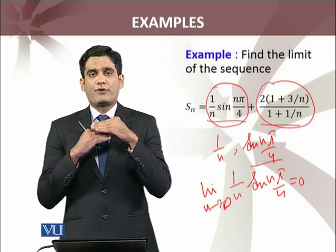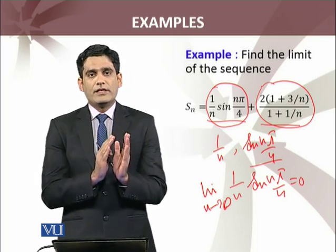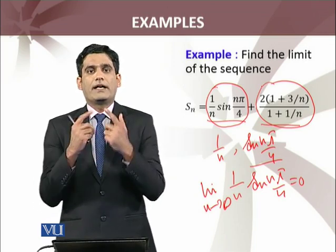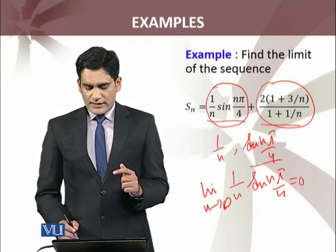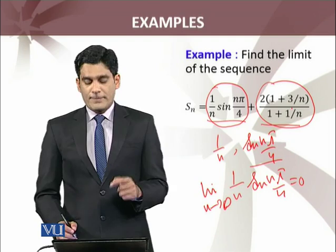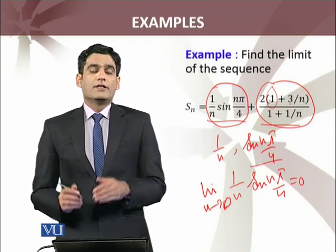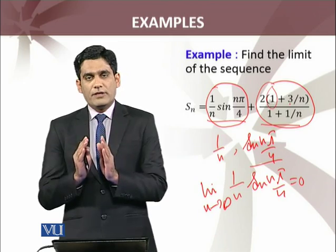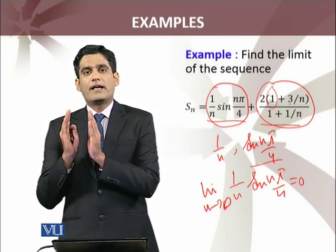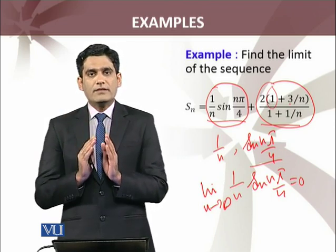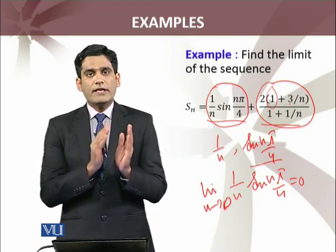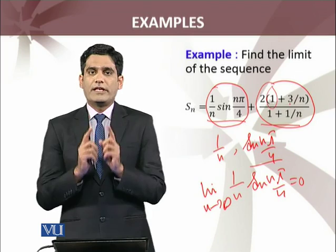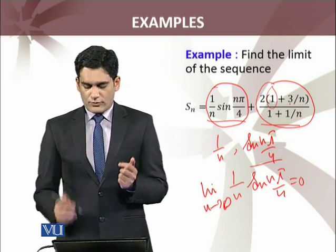Now I'll consider the second term. I can see there is a fraction, so I'll deal with the numerator and denominator separately. If both are convergent, I'll apply the theorem discussed in the last module. The numerator sequence is 1 + 3/n. There's a constant term plus 3/n. By the constant multiple rule, the limit of 3/n equals 3 multiplied by the limit of 1/n, which is 0, so the limit of 3/n is 0.